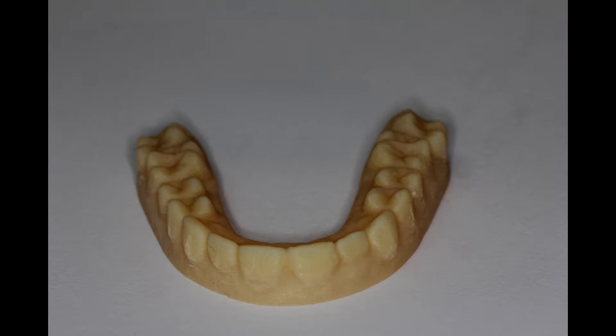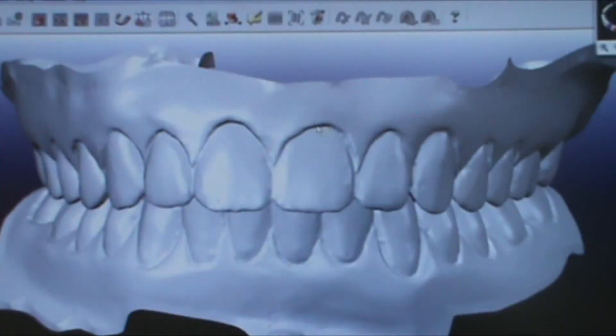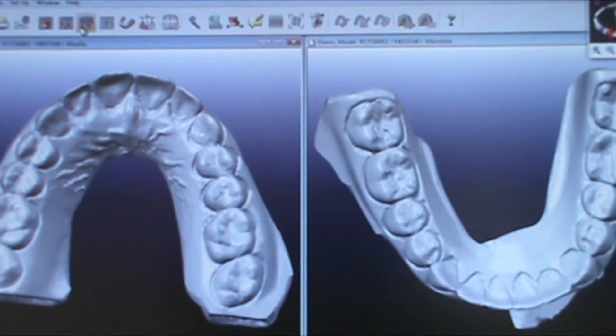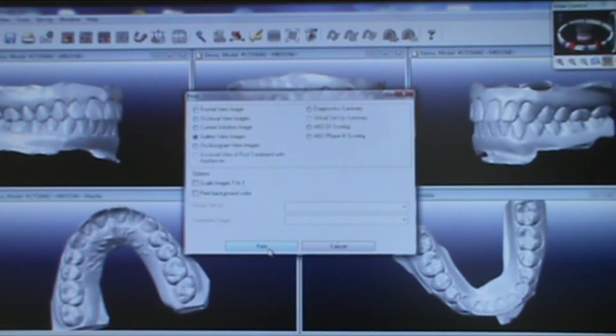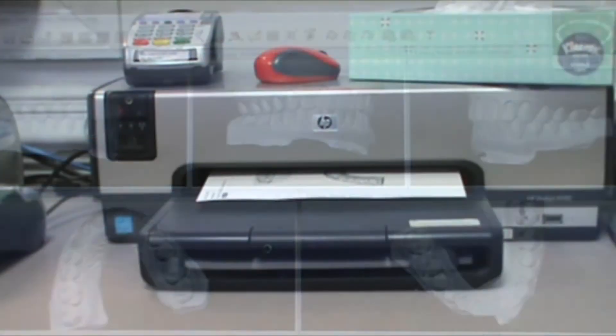A plastic model is then printed on a 3D printer or the doctor can view the model on a computer. A 3D picture can be printed on any ordinary printer.